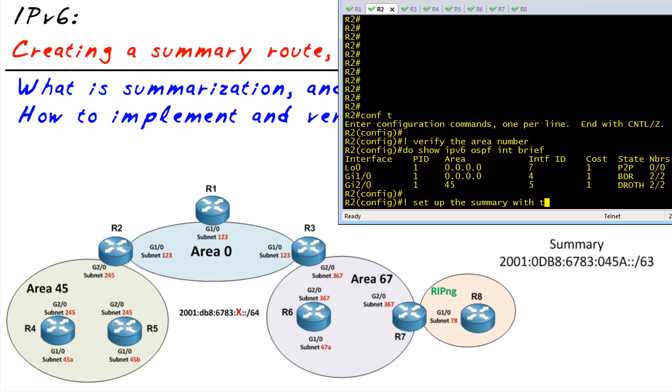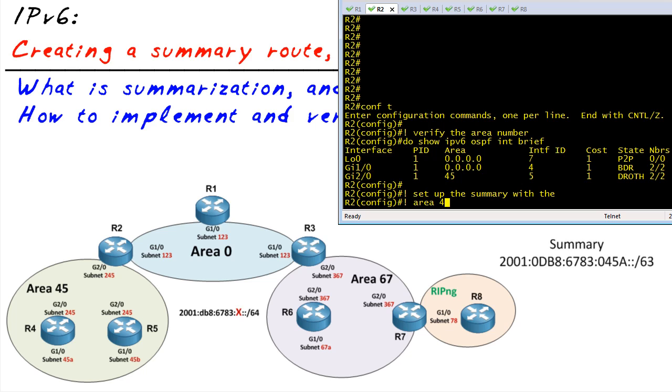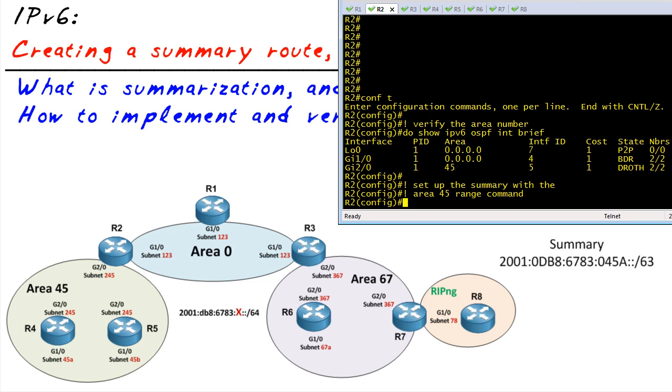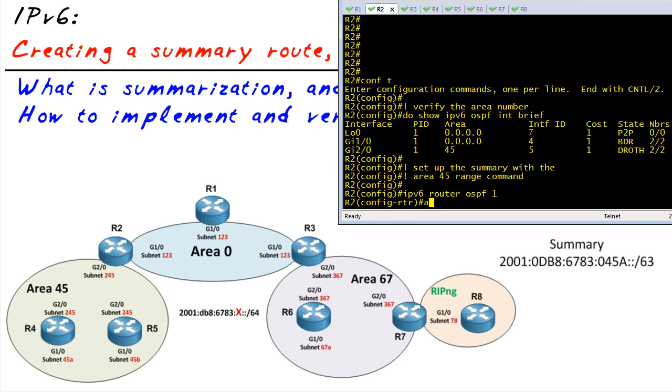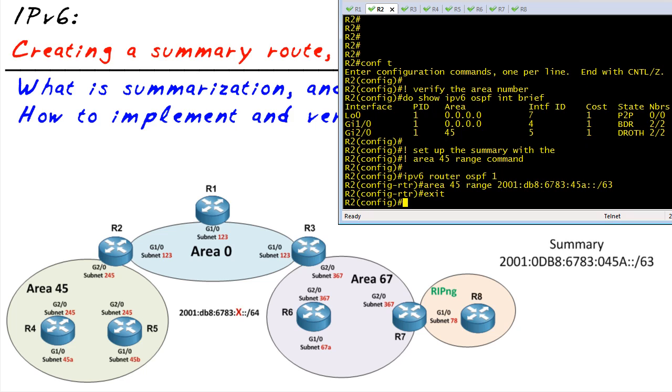To do so we're going to go into ipv6 configuration mode for OSPF and then specify area 45, which is the area for which we want to do the summarization on. And we're going to specify the summary of 2001:db8:6783:45a with a slash 63 bit mask, and we're done. Now OSPF has already converged - it's very quick to do.